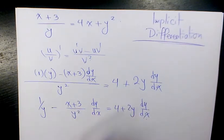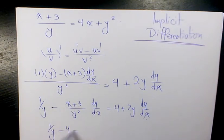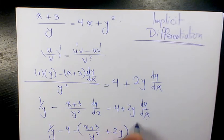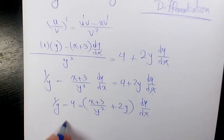So move it to this side and you move this 4 to the other side. It's going to be 1/y - 4 equals (x+3)/y^2 + 2y times dy/dx.